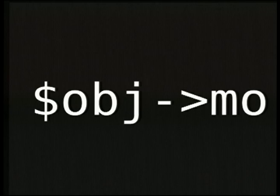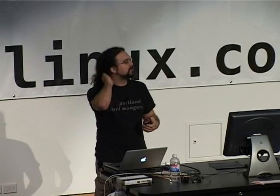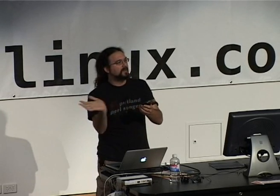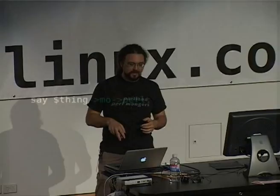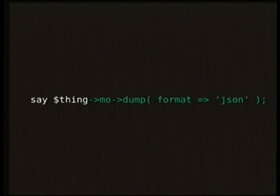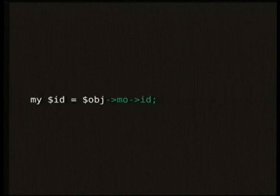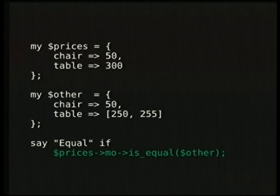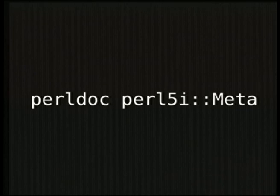We even have a meta object so you can do introspection on any object. Rather than polluting the top-level namespace, I created a side namespace by having everything return a meta object — a little hack for Perl — so we don't pollute the top. We have our own little universal thing on the side. This allows you to take any object and dump it out as Perl or as JSON. You can take a checksum in MD5. Everything now has a universal object identifier. You can check if two complicated data structures are equal, and it'll work on overloaded objects in a sensible fashion.